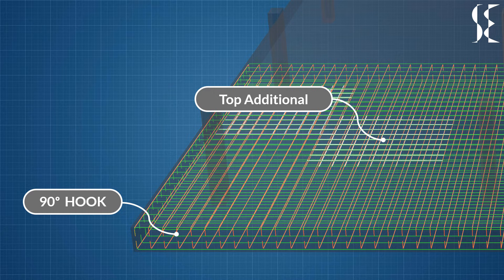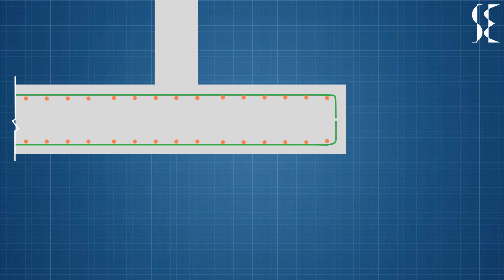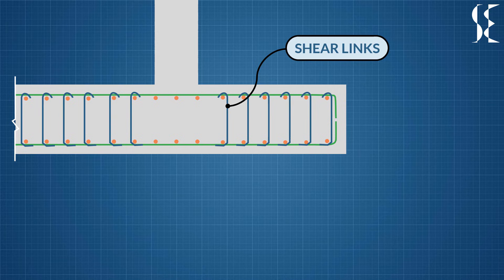90-degree hooks are provided at the ends of each rebar for sufficient anchorage with concrete. Shear reinforcement around the column can also be provided if the thickness of the raft is not sufficient to resist the shear. This shear reinforcement can be in the form of shear links or shear studs. They will resist the punching shear and keep the thickness of the raft less.